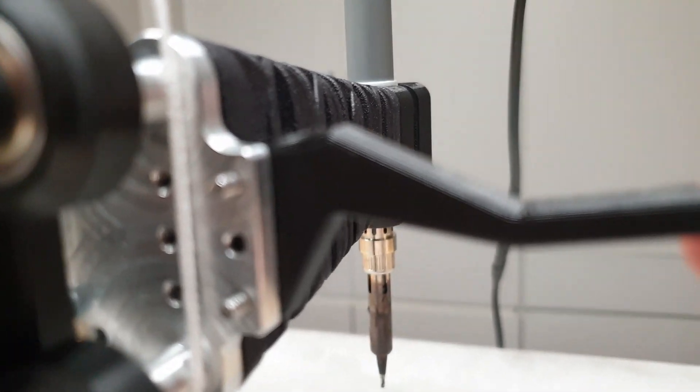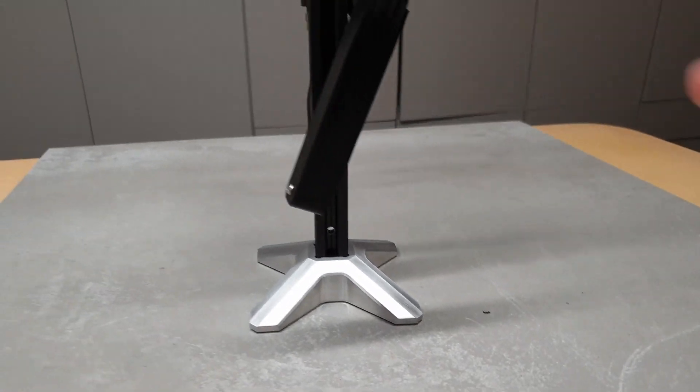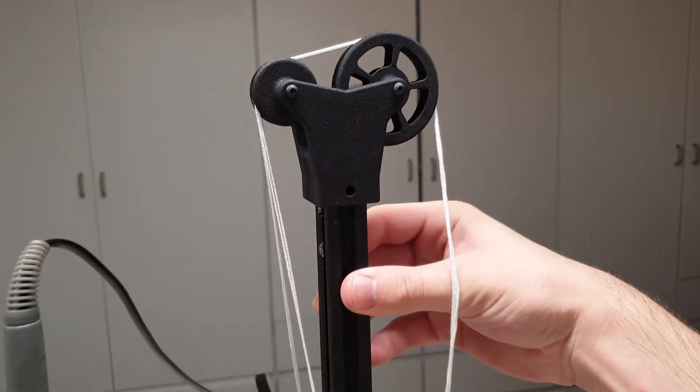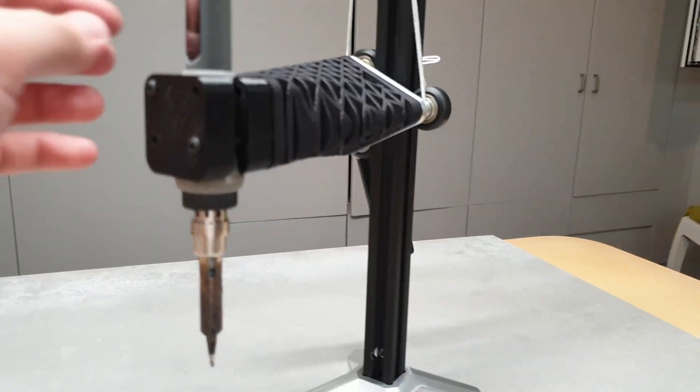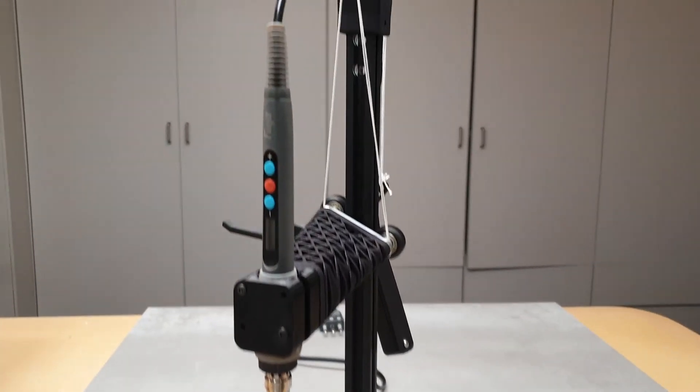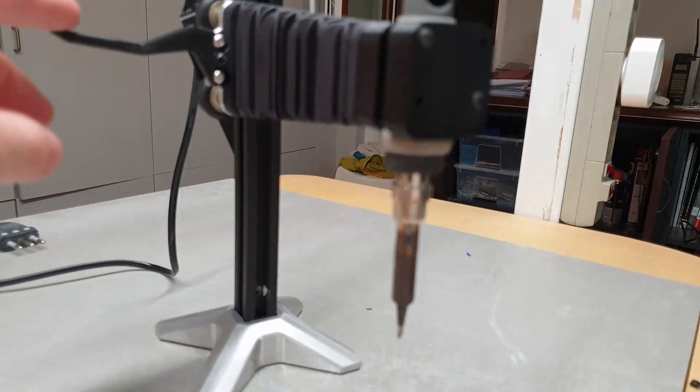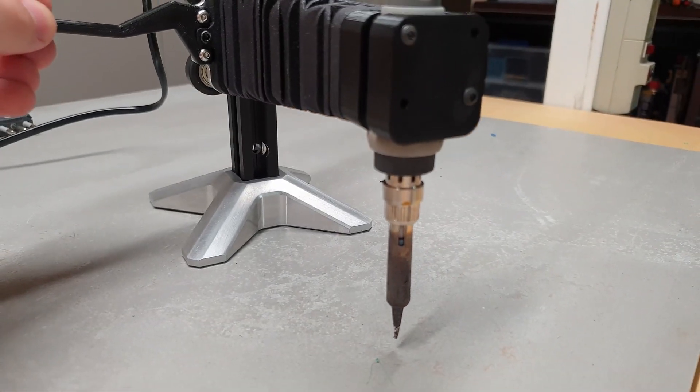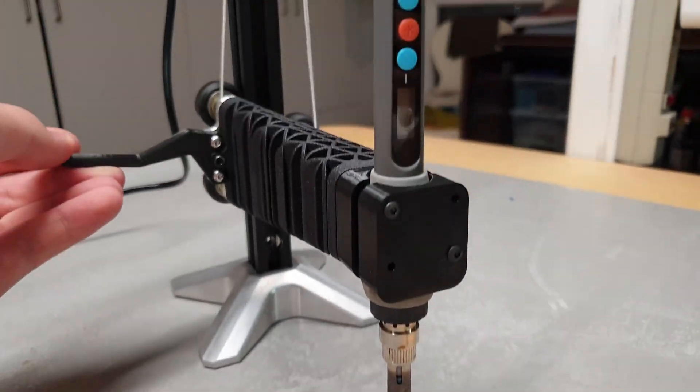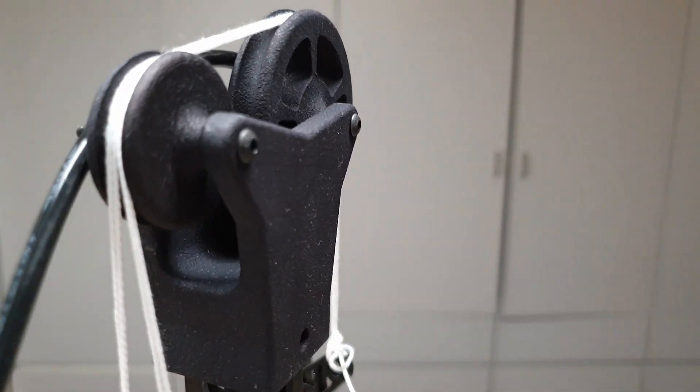Also, it would be very nice to have a version that has two axes instead of one, so it can move in the wide direction but also in the depth direction. This would make it so much easier to position different heat set inserts in a single part.